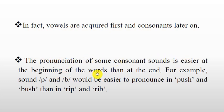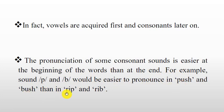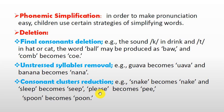Vowels are acquired first and consonants later. The pronunciation of some consonant sounds is easier at the beginning of words than at the end. For example, sounds like /p/ and /b/ would be easier to pronounce in 'push' and 'bush' than in 'trap' and 'rap'.